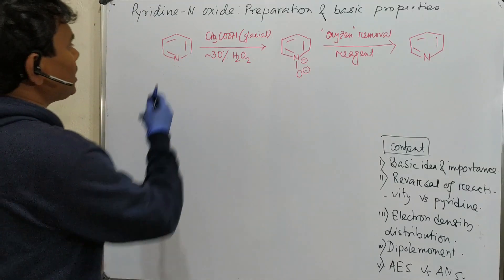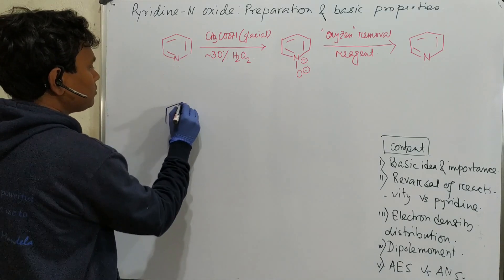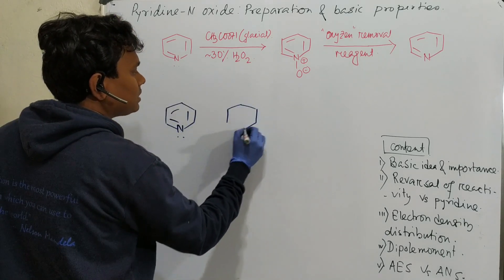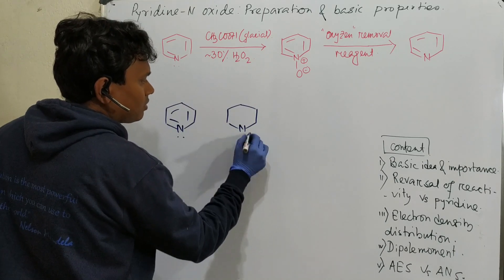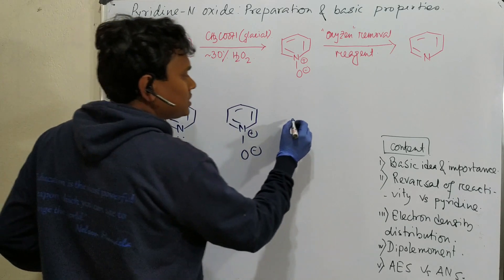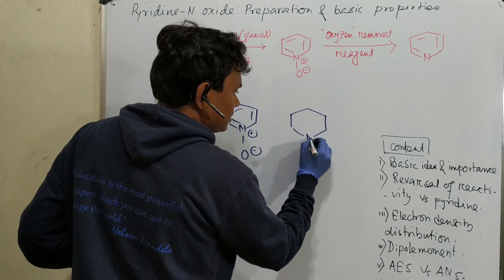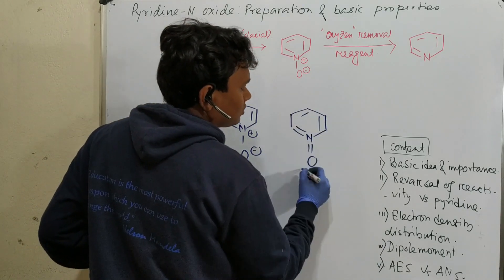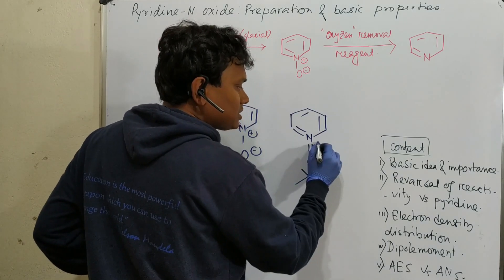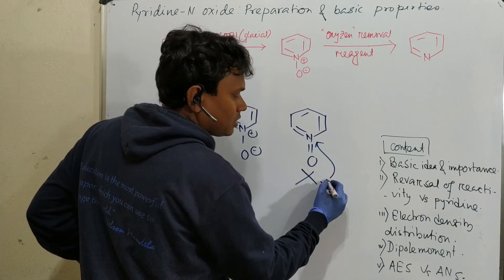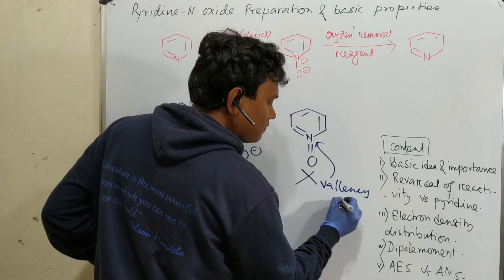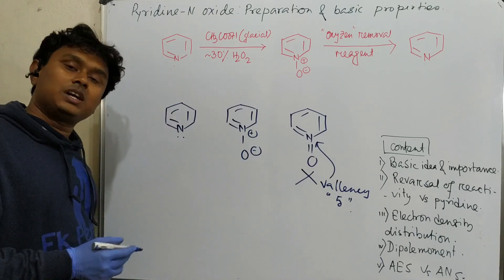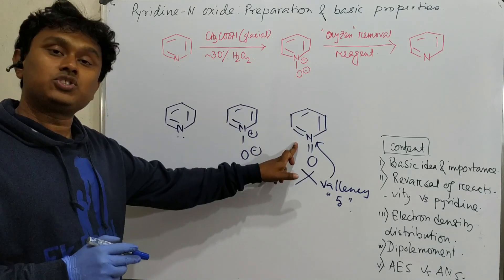If you look at the pyridine molecule versus pyridine N-oxide — this is the pyridine and this is the pyridine N-oxide — never make this mistake of drawing a double bond between nitrogen and oxygen. That is wrong, because nitrogen does not have energetically accessible vacant d-orbitals. If it were phosphorus, we could write it that way. So the actual structure should be written with N⁺–O⁻.